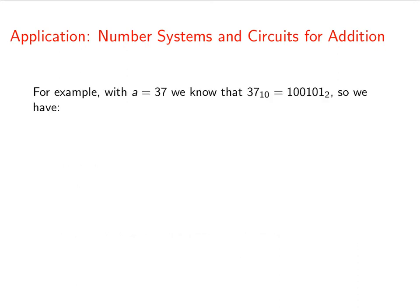So for example, with a equals 37, we know, and it's pretty easy to see, that 37 base 10 is equal to 100101. That's not hard to calculate. And so here's what we're going to do.